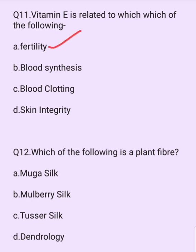Which of the following is a plant fiber? Options are: muga silk, mulberry silk, tussar silk, dendrology. The answer is option B: mulberry silk.